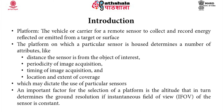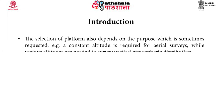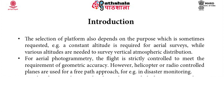An important factor for the selection of a platform is the altitude, which in turn determines the ground resolution if the instantaneous field of view of the sensor is constant. The selection of platform also depends on the purpose. For example, a constant altitude is required for aerial surveys, while various altitudes are needed to survey vertical atmospheric distribution. For aerial photogrammetry, the flight is strictly controlled to meet the requirement of geometric accuracy.